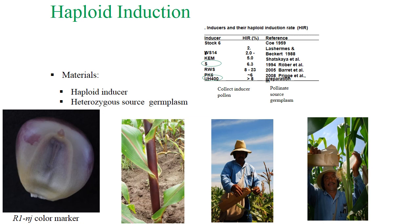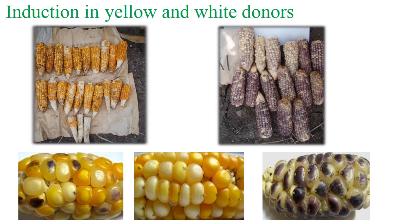Here is a protocol showing how CIMMYT develops double haploid lines. They use inducers and heterozygous source germplasms. They also need laboratory techniques and a color marker to differentiate the ploidy level of the scutellum or the endosperm.